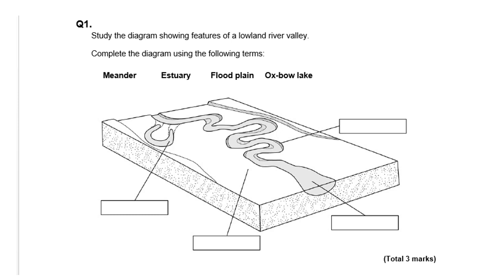Question one: complete the diagram using the following terms. Don't use any terms that aren't there — that will definitely be wrong, so only use the terms provided. It's a total of three marks with four boxes to fill in. If you have absolutely no idea, my advice is to simply guess. You might notice at the far left-hand corner there's an area of water not connected to a river — there's a fairly good chance that is an oxbow lake. Always guess; you've got a decent chance of picking up marks even if you don't know what an estuary, floodplain, or oxbow lake is. The answers are: oxbow lake, floodplain, estuary (the tidal part of a river), and a meander or bend in a river.